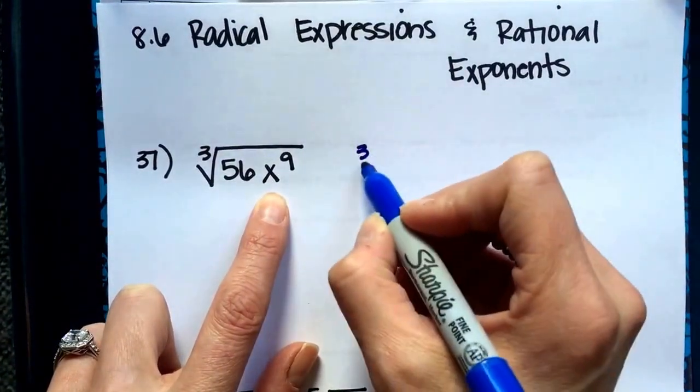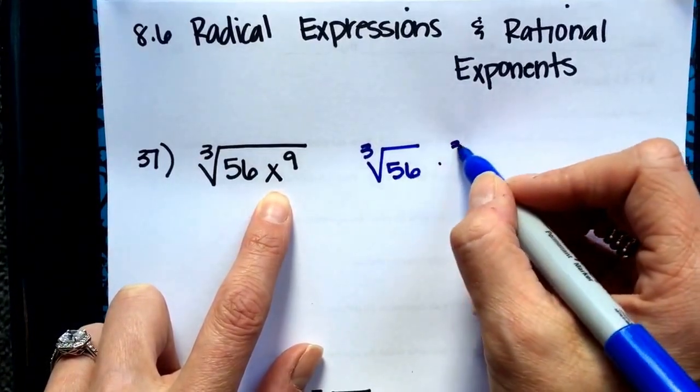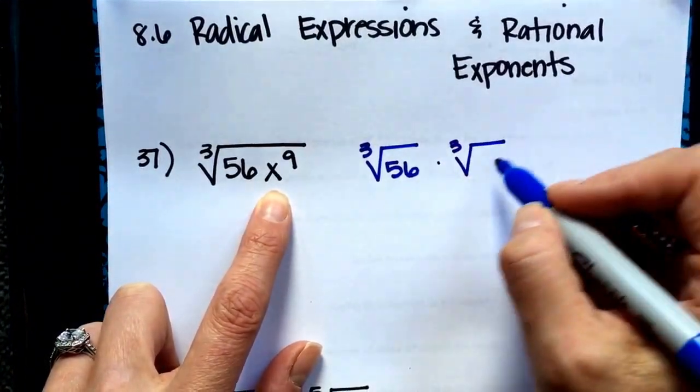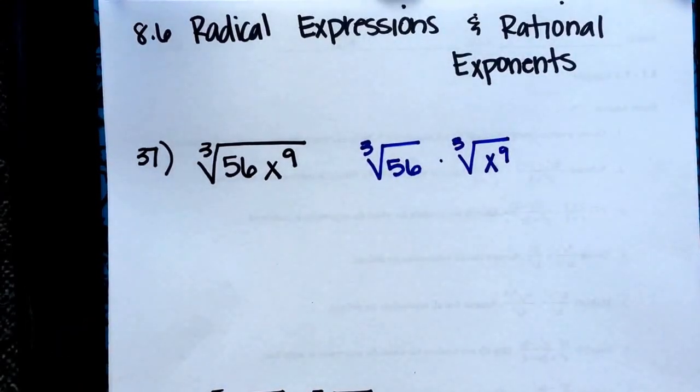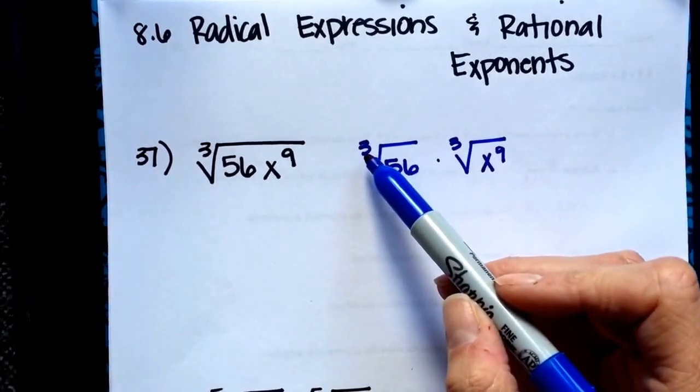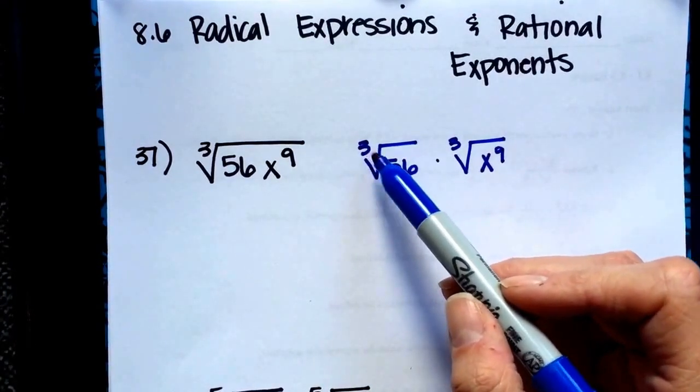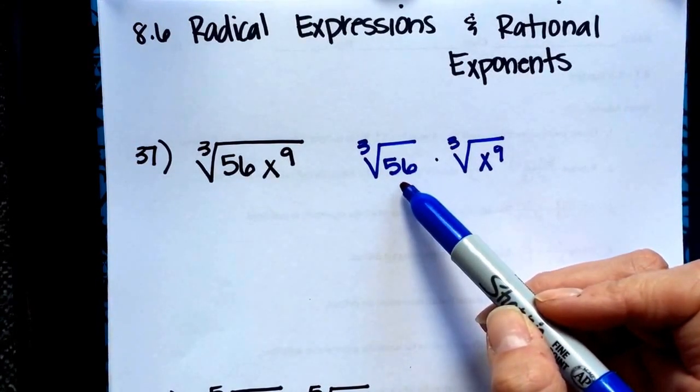The third root of 56 multiplied by the cubed root of x to the ninth. We're going to try to simplify each one of those separately. For the third root, I need to multiply something three times, some number by itself three times to equal 56, and there's not a number that works for that.